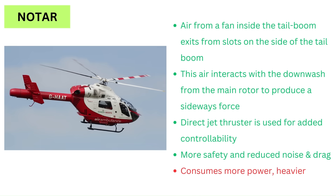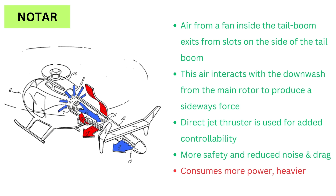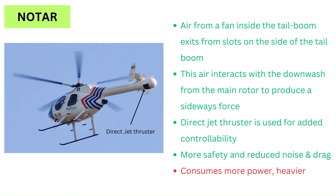Another interesting type is the NOTAR, short for no-tail rotor. A variable pitch fan inside the tail boom draws air in and pumps it down the boom, creating a high-volume, low-pressure airflow. This air exits through Coandă slots along the side of the tail boom. The downwash from the main helicopter rotor interacts with this airflow and produces a sideways lift force. To make this sideways force more controllable, the rest of the air is pushed out of a slot at the end of the tail boom, where a direct jet thruster plus vertical fins are used to fine-tune yaw and directional stability. The advantage of this system is more safety and reduced noise, as well as reduced drag in cruise. But it consumes more power and is heavier than a conventional tail rotor.